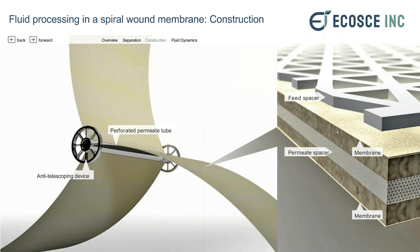What makes it through the membrane has to penetrate through the membrane layer, and in between this layer here is where the permeate flows. This layered structure allows you to spiral-wind the membrane to make a continuous flow system.